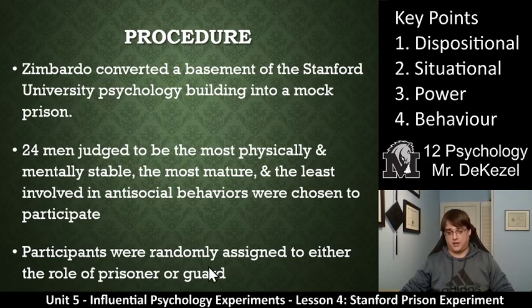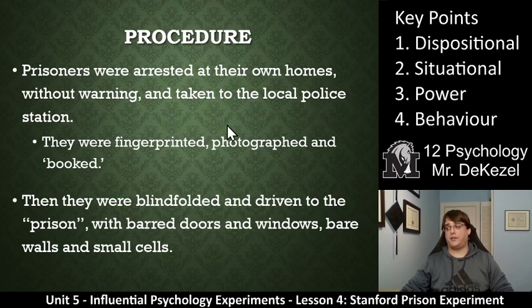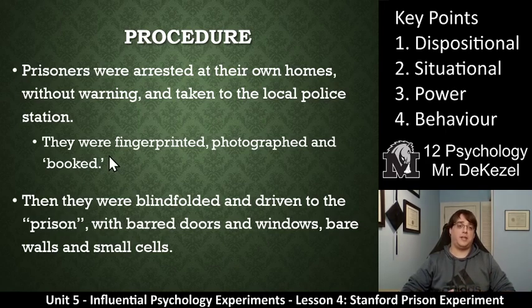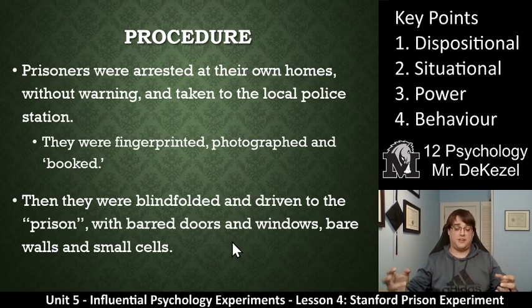The experiment started by the guards arresting the prisoners at their own homes without warning. They were then taken to the local police station where they were fingerprinted, photographed, and booked. These prisoners were treated like real prisoners from the very beginning — arrested without warning, taken to the police station, got the mugshot and fingerprinting. They were then blindfolded and driven to the prison — back to the Stanford basement.